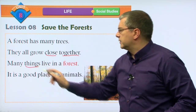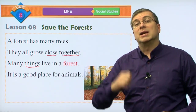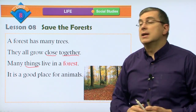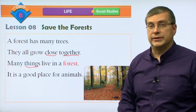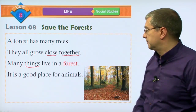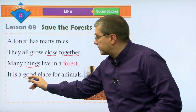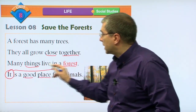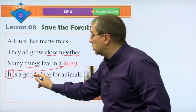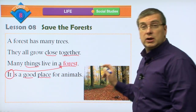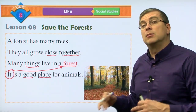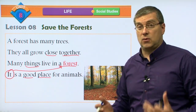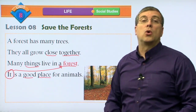Many things live in a forest - things meaning animals and plants together. There are many different things that live in a forest. It is a good place for animals. There's lots of food: animals eat plants. Animals can also find shelter in a forest. So it's a good place for animals.